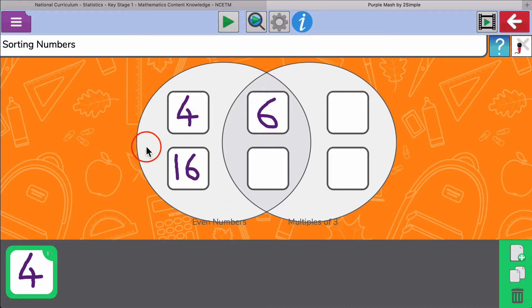I've got a circle here which contains even numbers and a circle here which contains multiples of three, so I just need to finish these last three boxes off.